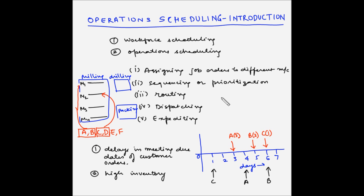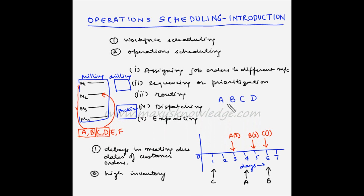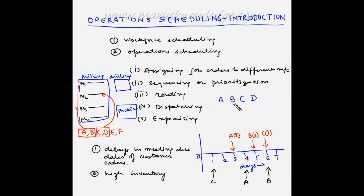Suppose there are four jobs A, B, C, and D. Jobs A and B require one kind of setup on the machine — once you change the tool, you can process both on the same tool. But C and D require a different tool. If you process jobs in the order A, C, B, D instead of grouping similar setups together, you incur unnecessary additional machine setups.